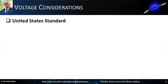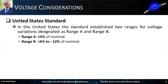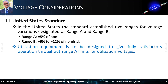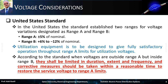In the United States, the standard established two ranges for voltage variations, designated as Range A and Range B. Range A utilization voltage range is plus or minus 5% of nominal, and Range B has the asymmetric range plus 6% to minus 12% of nominal. Utilization equipment is to be designed to give fully satisfactory operation throughout Range A limits for utilization voltages. According to the standard, when voltages are outside Range A but inside Range B, they shall be limited in duration, in extent, and in frequency, and corrective measures should be taken within a reasonable time to restore the service voltage to Range A limits.